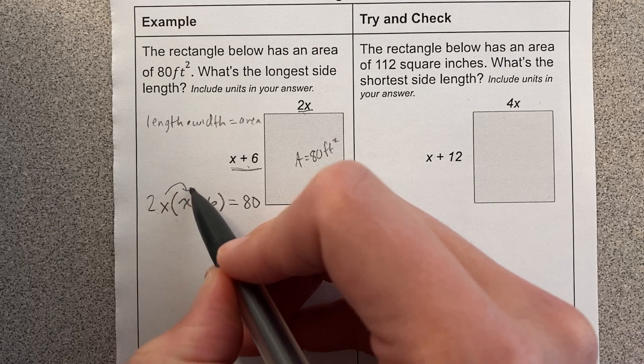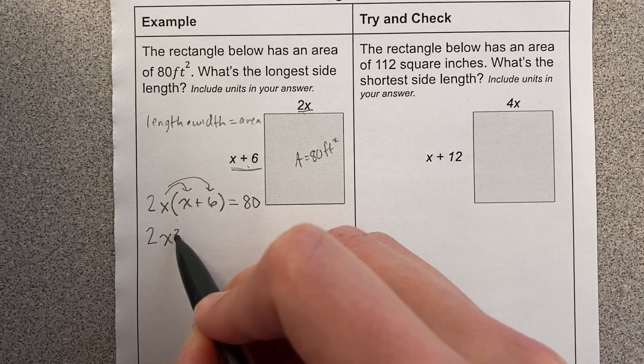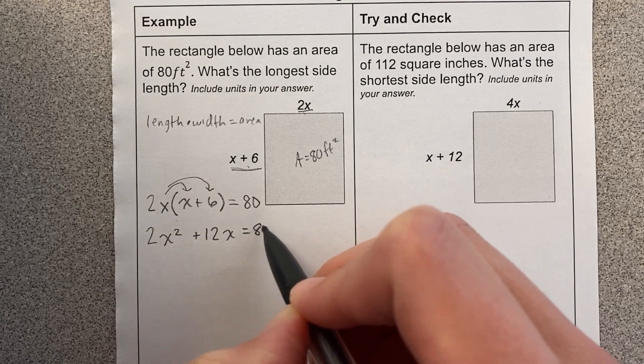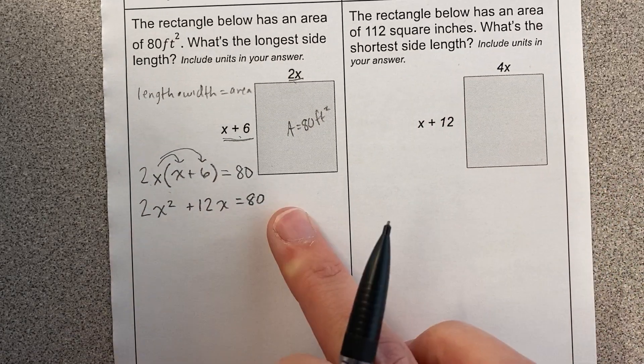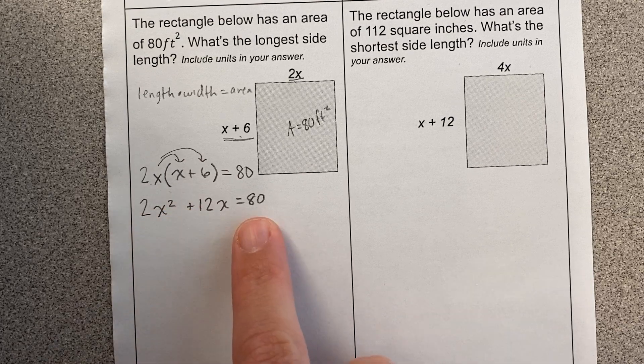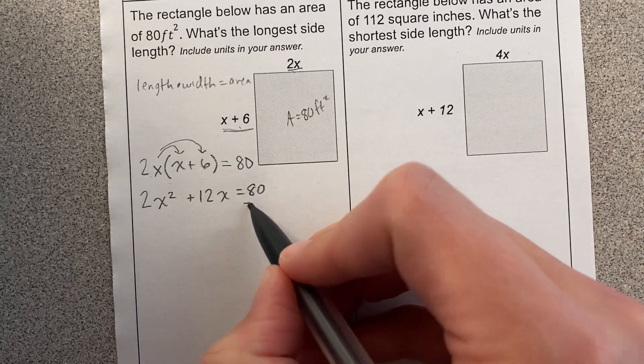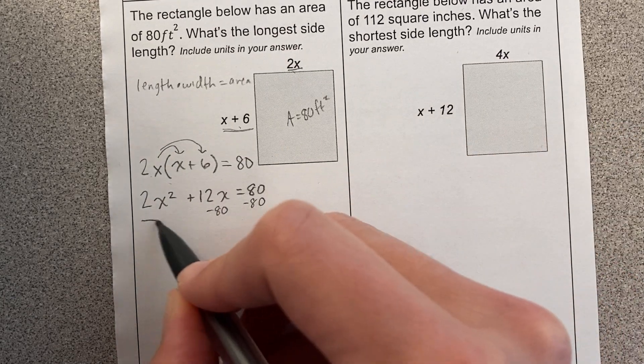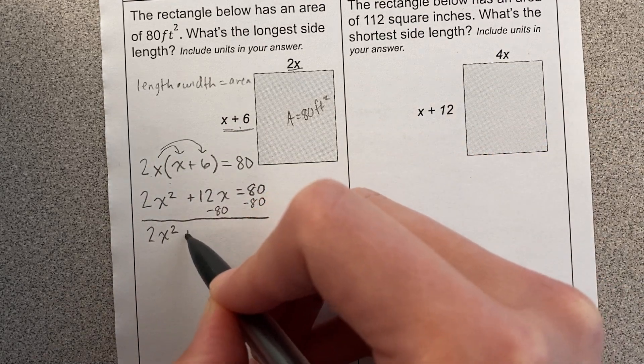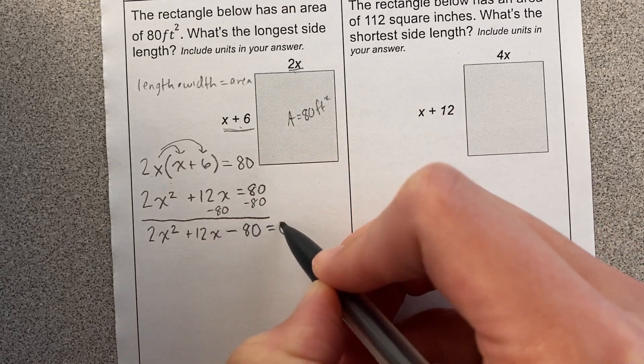All right, let's have at it. I'm going to distribute. 2x times x is 2x², 2x times 6 is 12x equals 80. Okay, now I have an equation. It is a quadratic equation. How do I know? Because it has a power of 2. But what I notice is it's not in standard form, right? We need this to be a 0 over here. So I'm going to go ahead and subtract 80 from both sides. What I'm going to end up with is three separate terms: 2x² + 12x - 80 = 0.